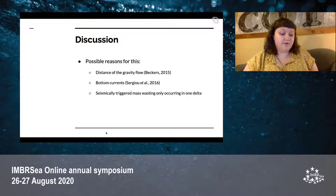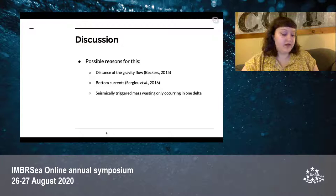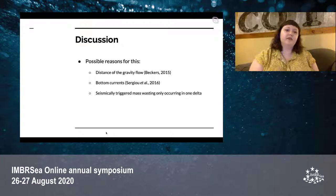Also, there are high levels of reworking throughout these cores indicating strong bottom currents and bioturbation that may have disturbed smaller events so much that they were no longer recognizable. Additionally, the assumption that seismic triggering may have caused simultaneous slope failure may have been incorrect, and only one slope failure may have appeared smaller than initially expected.